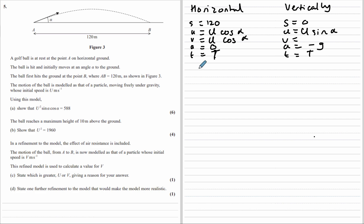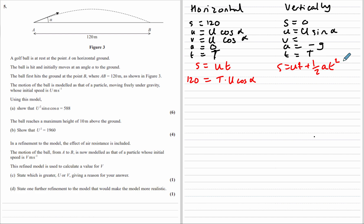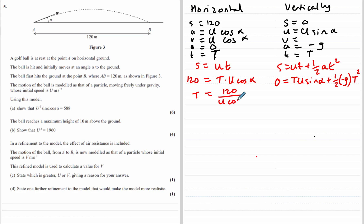Applying s equals ut plus half at squared for both components. Horizontally, acceleration is 0, so it simplifies to s equals u cos alpha times t, giving 120 equals u cos alpha times t. We want to eliminate t, so we rearrange the horizontal equation: t equals 120 over u cos alpha.